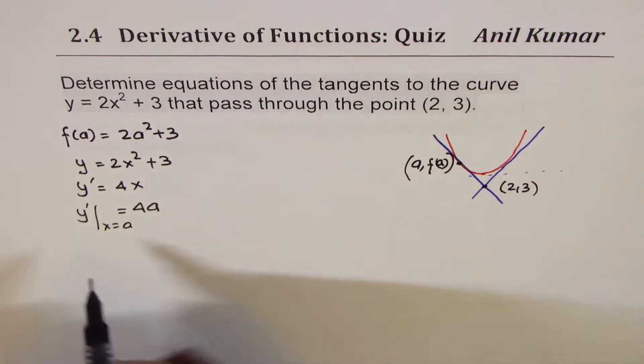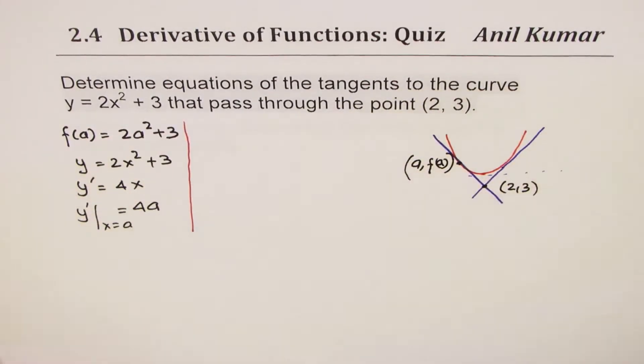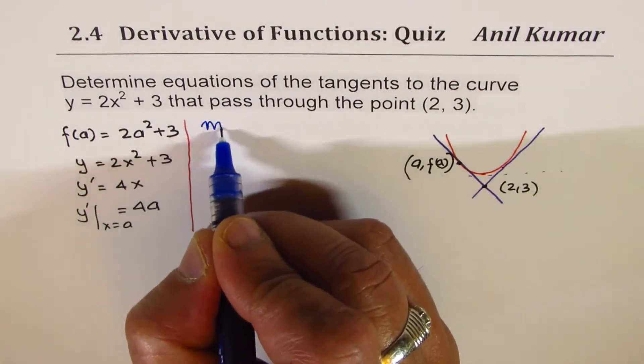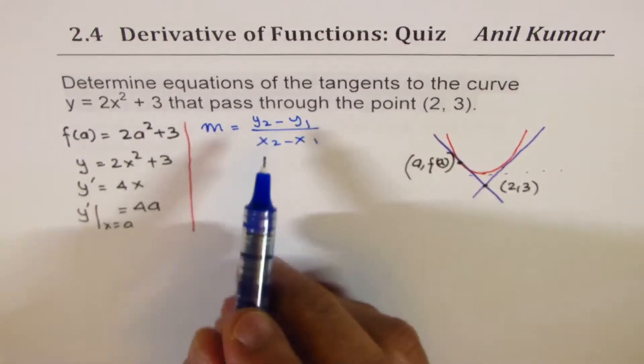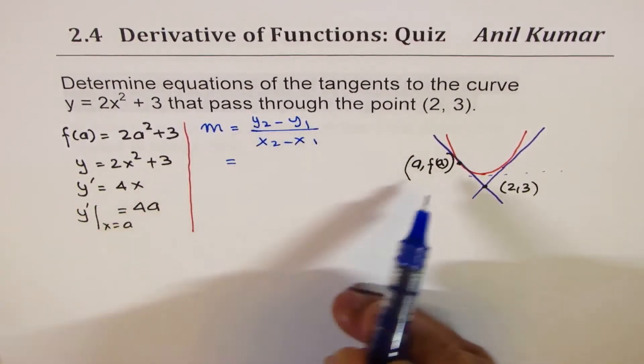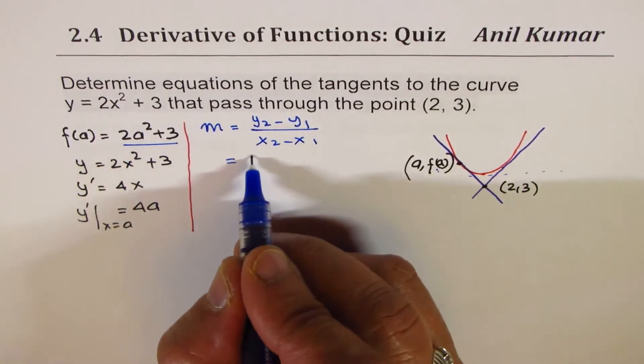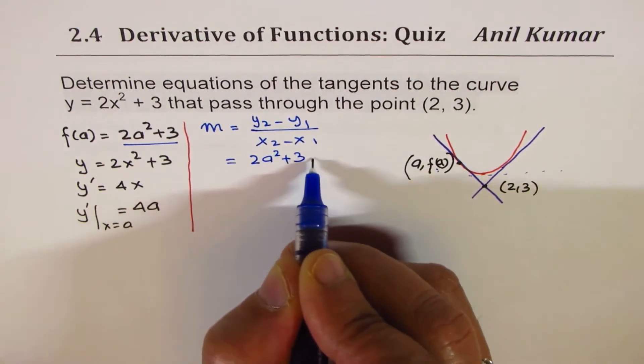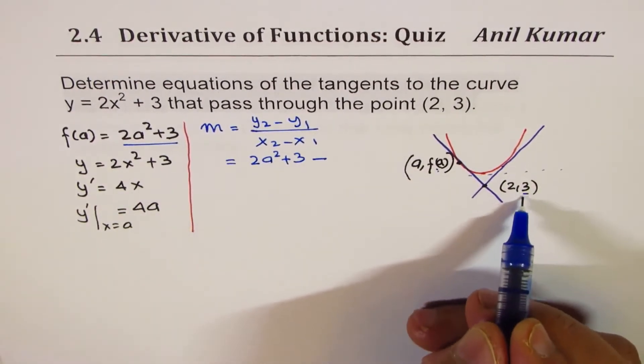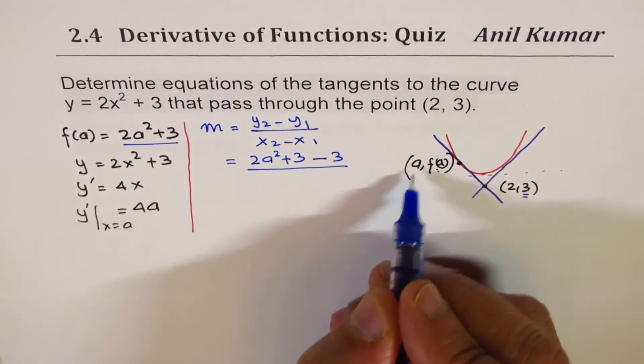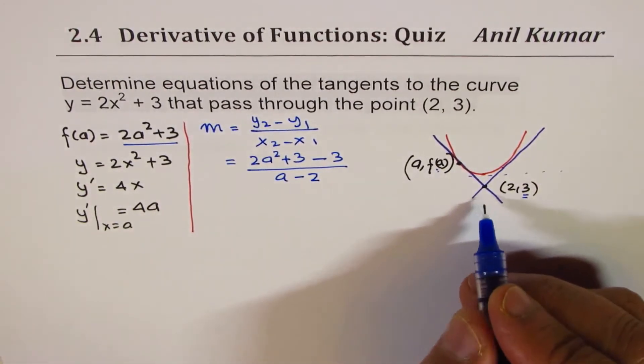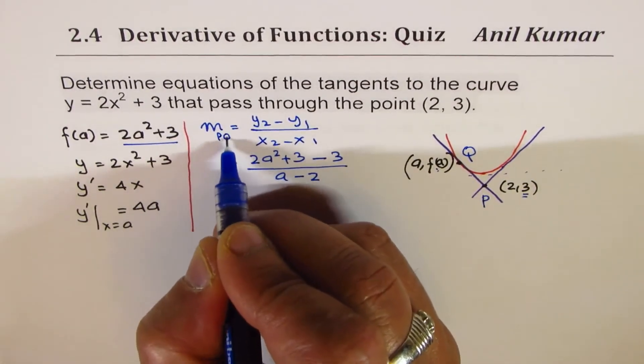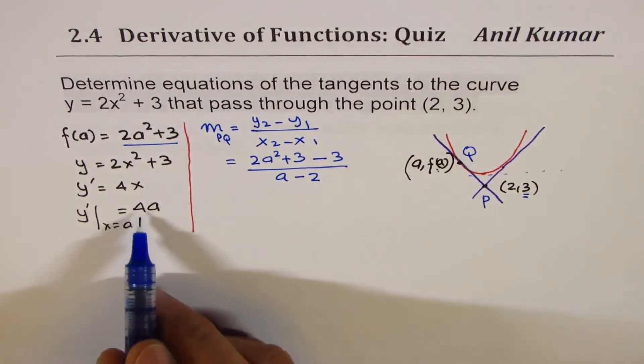So this is one way of finding derivative. The other way is we could always write rise over run. So the alternate method here to find derivative is that slope m is (y2 minus y1) over (x2 minus x1). So in our case, we could do (2a squared plus 3 minus 3) over (a minus 2). So we get slope between these two points, which is also 4a.